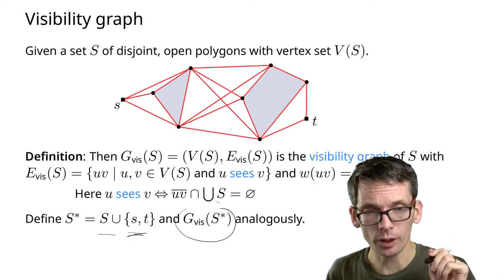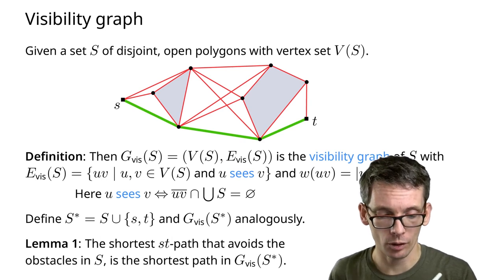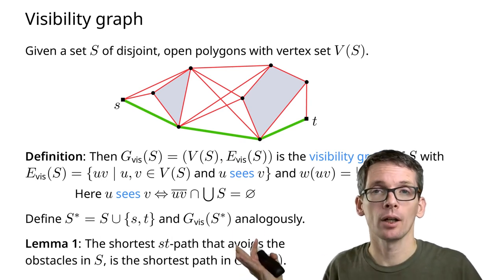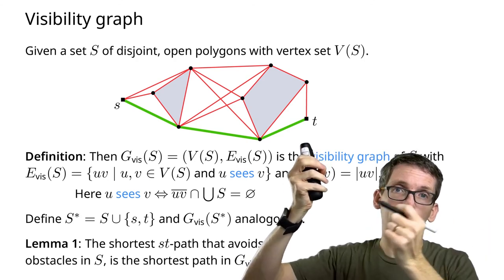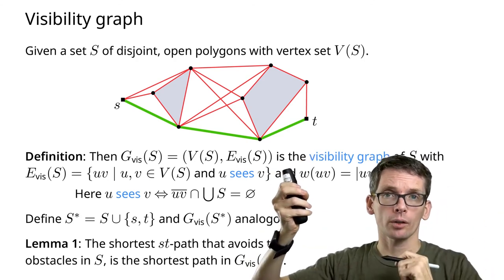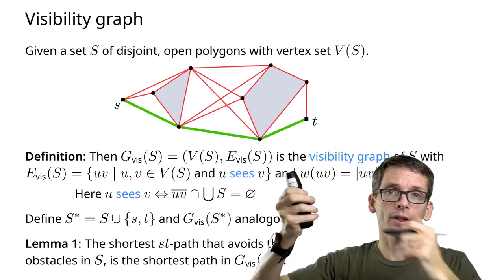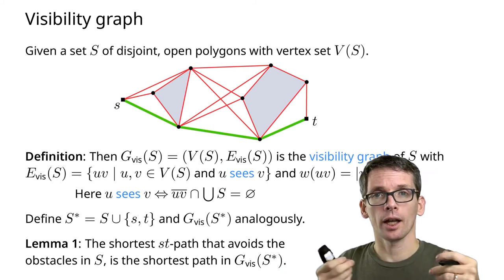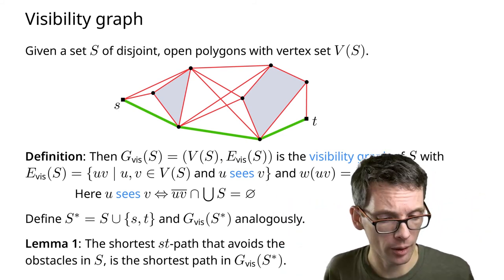Now, the shortest path from s to t is the shortest path in this graph, and that is simply the case because we already know that the shortest path from s to t has only vertices of the polygons as intermediate vertices, beyond that is polygonal, and obviously all the edges are edges between vertices that can see each other, otherwise they would go through polygon interiors.